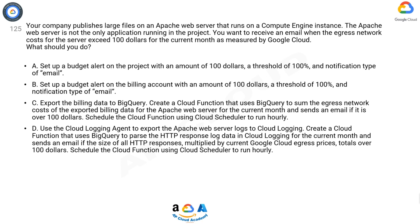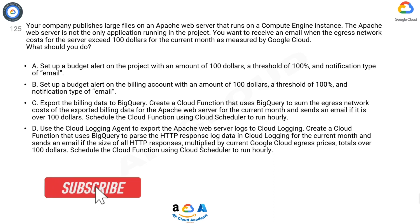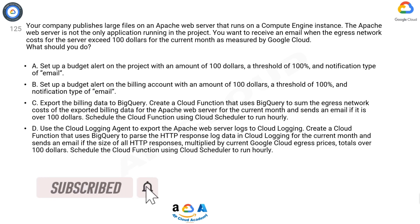A: Set up a budget alert on the project with an amount of $100, a threshold of 100%, and notification type of email. B: Set up a budget alert on the billing account with an amount of $100, a threshold of 100%, and notification type of email.